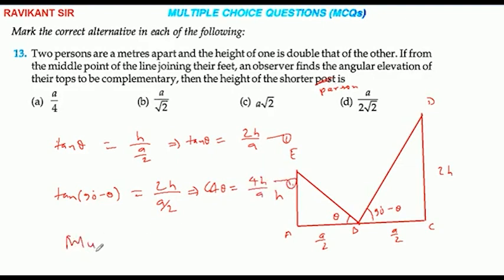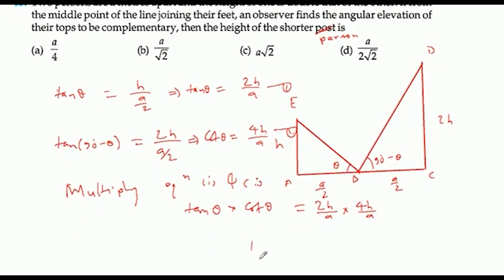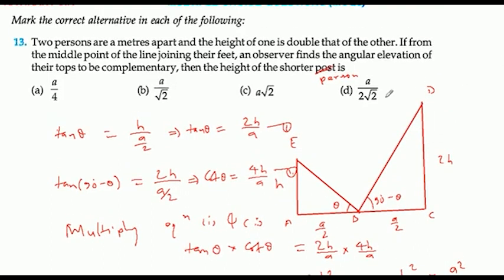Multiplying equation first and second: tan theta into cot theta equals 2h/a into 4h/a. So this will be 1, which will be equal to 8h²/a². That means h² equals a²/8. h will be a by 2√2. The height of the shorter person is a by 2√2.